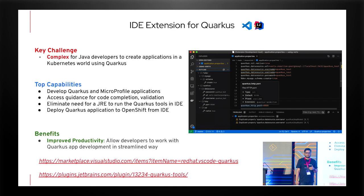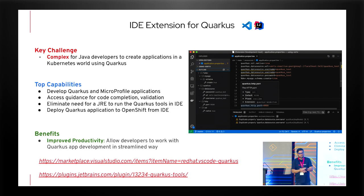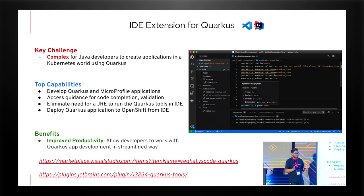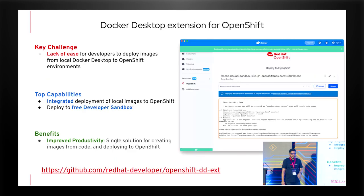Red Hat is focusing a lot on Java and Quarkus development. On the VS Code Marketplace the number one extension from Red Hat is the Java extension with approximately 19 million downloads. Red Hat, Microsoft, and Oracle work together to make a seamless developer experience around Java. The same level of functionality is incorporated for Java on Kubernetes, which is Quarkus.